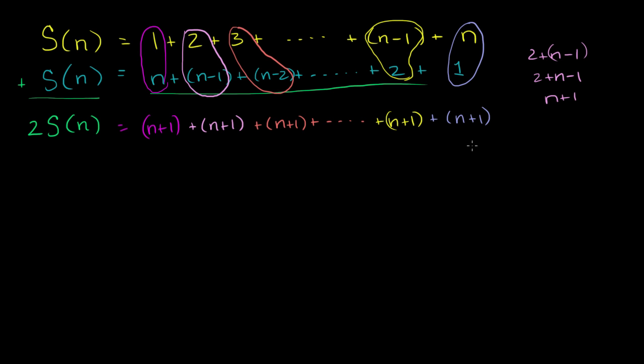So what's this whole sum going to be? Well, how many of these n plus 1's do we have? Well, we have n of them for every term in each of these sums. So this is 1, 2, 3, count all the way to n. You have n of these terms.